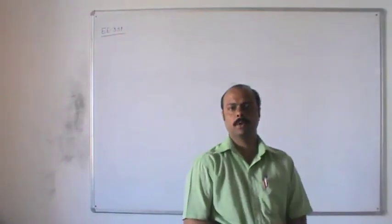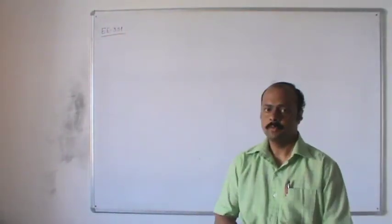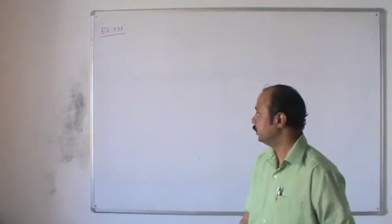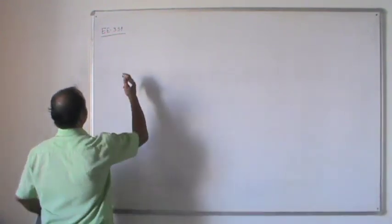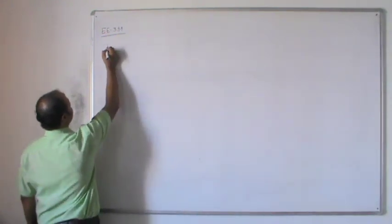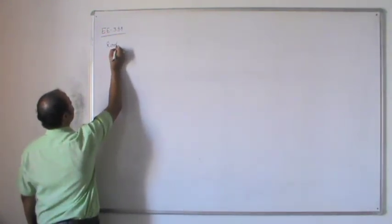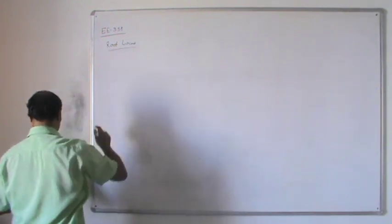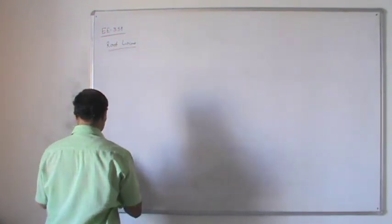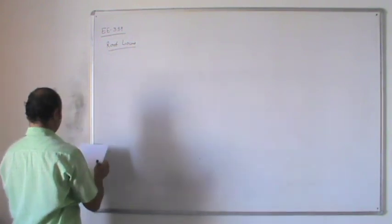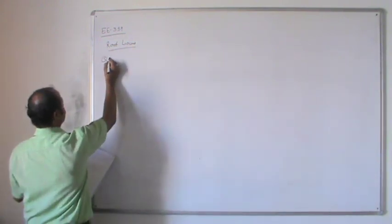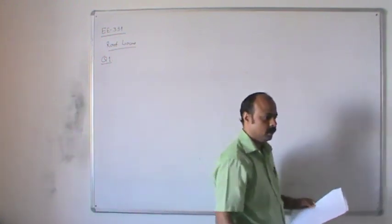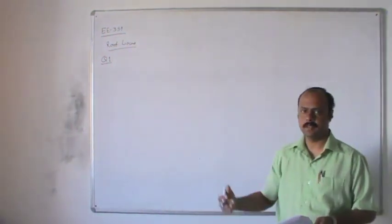In the last lecture we have seen about the Bode plot. Now today we will discuss the root locus, which is a graphical method of plotting the root loci or the roots of the characteristic equation. We will consider a question where we will follow all the procedure to see how to plot the root locus and how to analyze the system.